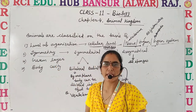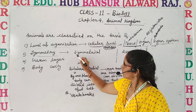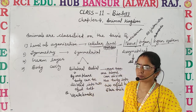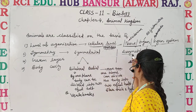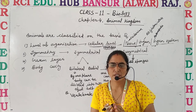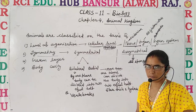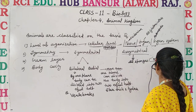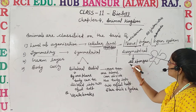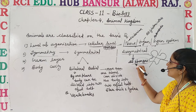The second way to classify animals is symmetry. Symmetry is a special characteristic of animals based on which their body can or cannot be divided into two equal halves. Some animals are symmetrical whereas some are asymmetrical. Asymmetrical organisms have an irregular shape and cannot be divided into two equal halves from any plane. All sponges come under this category.